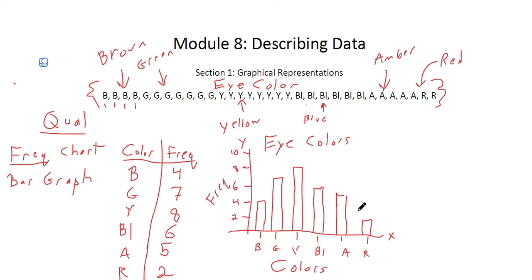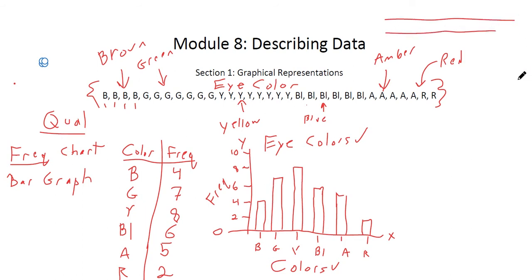Bar graphs work well for many circumstances and are usually preferred. One important thing: always have good labels. You also always want to make sure your bar graph starts at zero, because you're comparing bar heights. If you started at one instead of zero, one bar would look much taller relative to another than it actually is — that would be misleading. So for bar graphs, you should always start at zero.